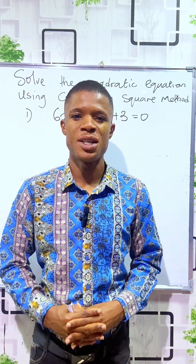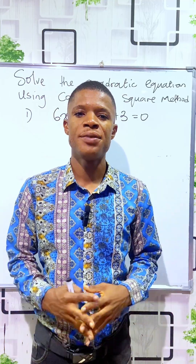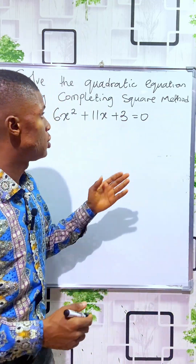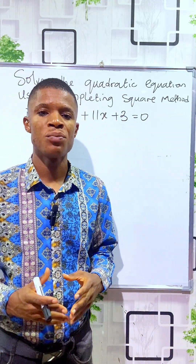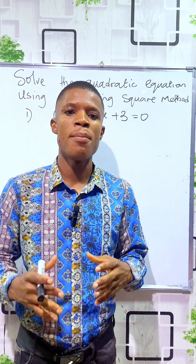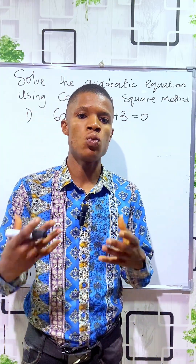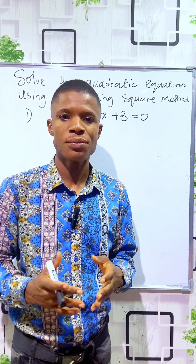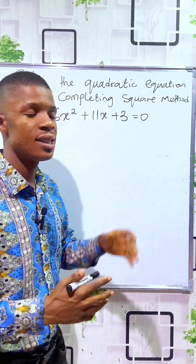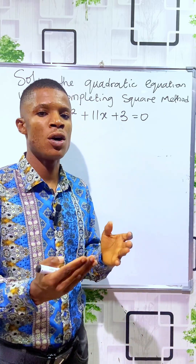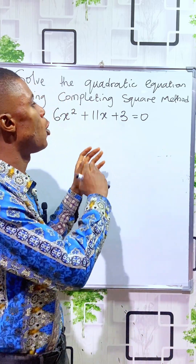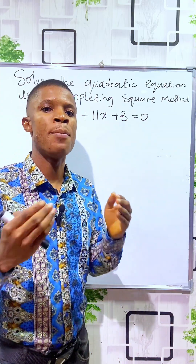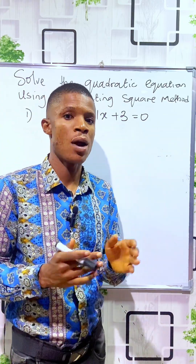Hey guys, welcome to Math with Esomnofu. In this video, we'll be learning how to solve quadratic equations using the completing the square method. We use completing the square method to solve quadratic equations where the given quadratic equation is not factorizable. The name 'completing the square' is coined because we are trying to complete or make the quadratic equation a perfect square so that we can now factorize.